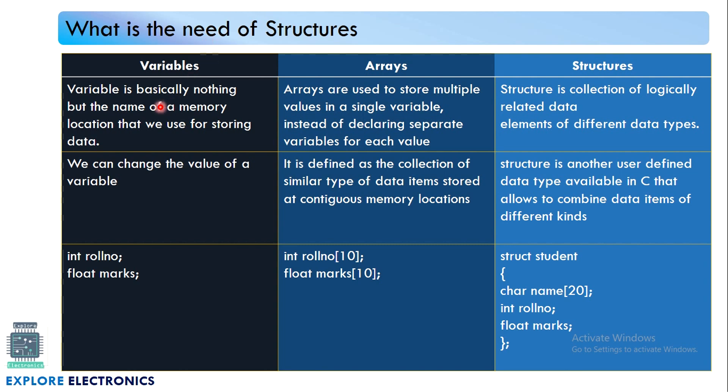To summarize: variables can hold only one data item of a single data type; arrays can hold multiple data items but all of the same data type; structures can hold multiple data items of multiple different data types.